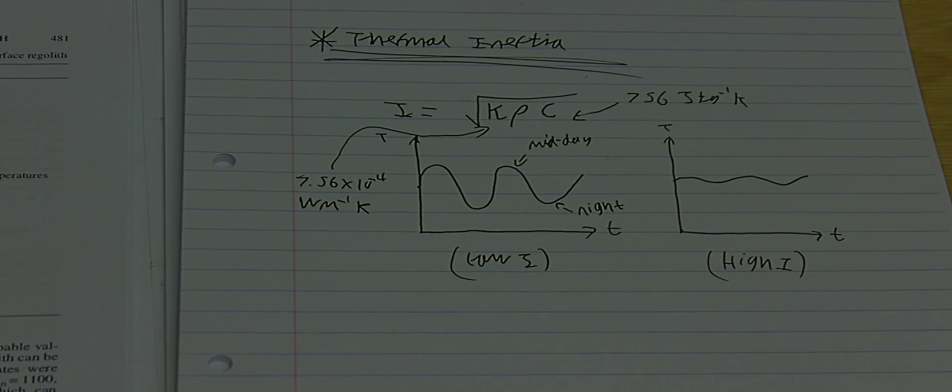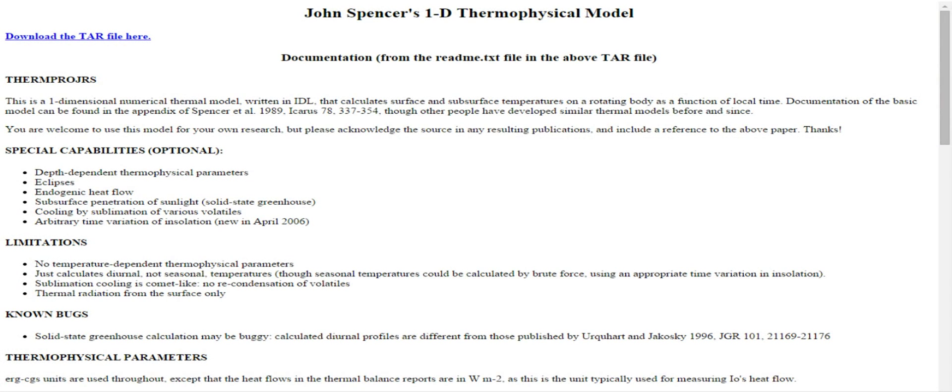Now let's take a look at what some of these curves actually look like when we feed them into a computer model. It's a one-dimensional thermal diffusion model written in the 1990s by John Spencer. Let's take a look at some of the results.